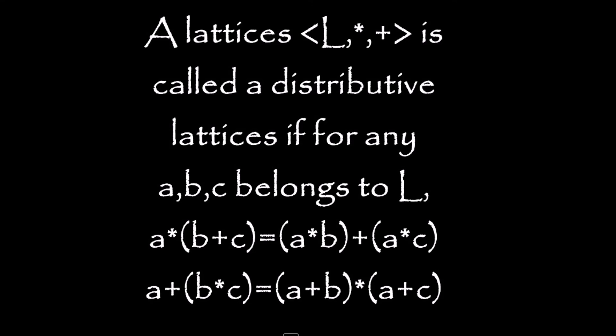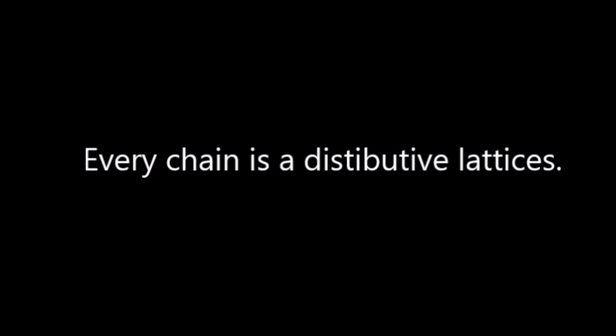Now we look at the distributive lattice. A lattice (L, ∧, +) is called a distributive lattice if for any A, B, C belonging to L the following properties hold: A ∧ (B + C) = (A ∧ B) + (A ∧ C), and A + (B ∧ C) = (A + B) ∧ (A + C). A lattice is called distributive when it satisfies these two distributive laws; otherwise it is not called distributive.